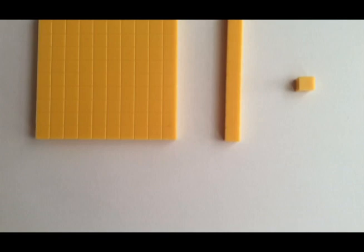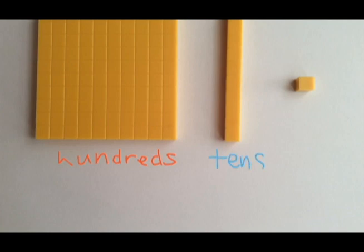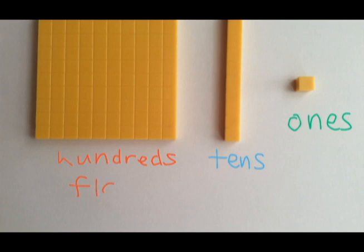To start, over here on the left the largest blocks that I have are hundreds. In the center we have a block that represents the tens, and on the right the smallest block represents ones. Now in our Everyday Math program we call these hundred blocks flats, groups of tens are called longs, and our ones are called cubes.